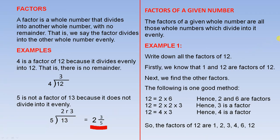Factors of a given number: the factors of a given whole number are all those whole numbers which divide into it evenly. Example 1: write down all the factors of 12. Firstly, we know that 1 and 12 are factors of 12. Next, we find the other factors. The following is one good method.